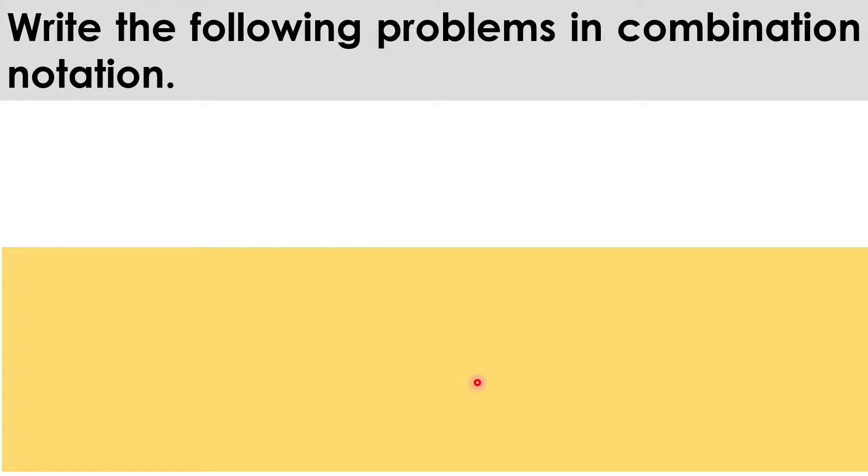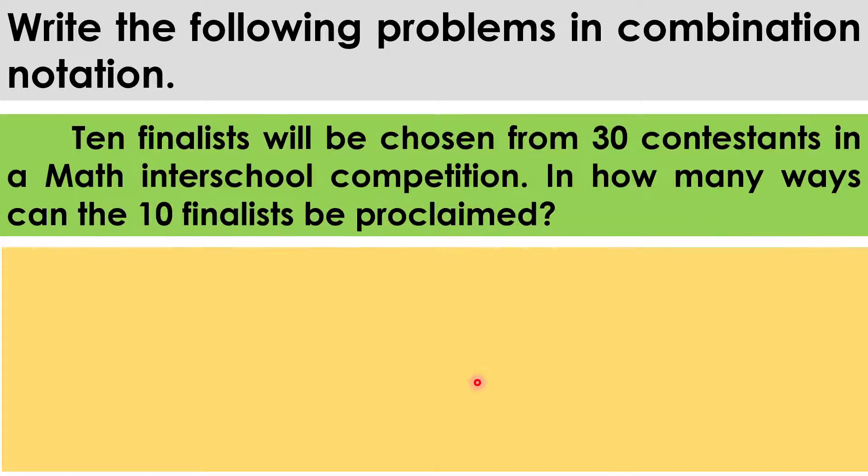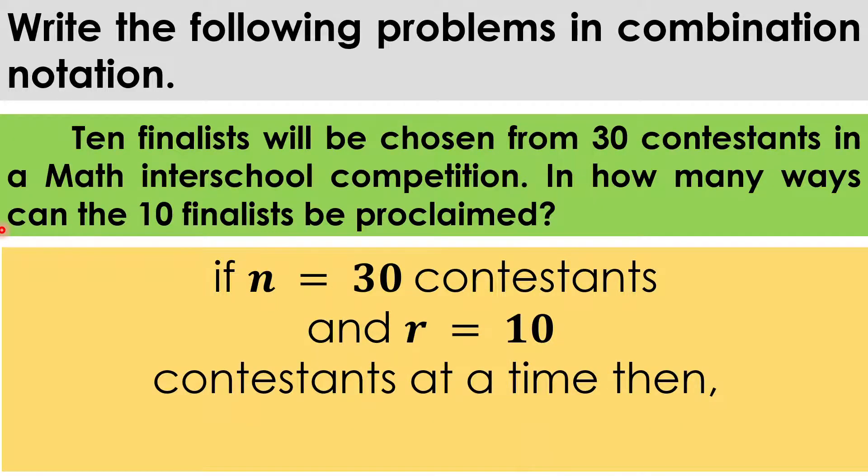We are going to write the following problems in combination notation. So, have question number 1. 10 finalists be chosen from 30 contestants in a math in their school competition. In how many ways can the 10 finalists be proclaimed? Since we have here, n is the 30 contestants and r is equal to 10 contestants at a time.